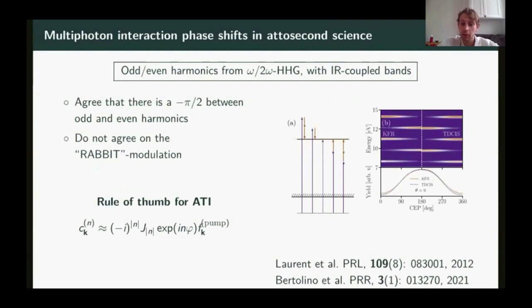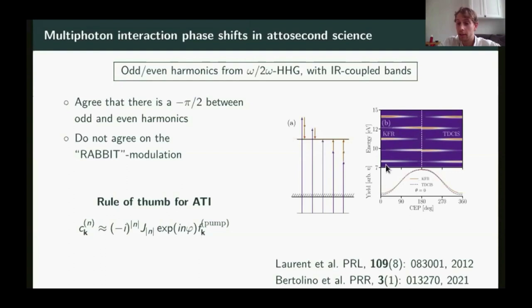We developed a new ab initio method and studied the experiment by Laurent et al., who performed laser-assisted photoionization with odd and even harmonics generated from omega to 2-omega high order harmonic generation. In this experiment, looking at the photoelectron spectrum with varying CEP or delay between the IR and odd/even harmonic components, they observed an alternating pattern between peaks corresponding to odd and even harmonics — called a checkerboard pattern. Their model explained this as requiring a minus pi over 2 phase shift between odd and even harmonics generated this way. We reached the same conclusion.